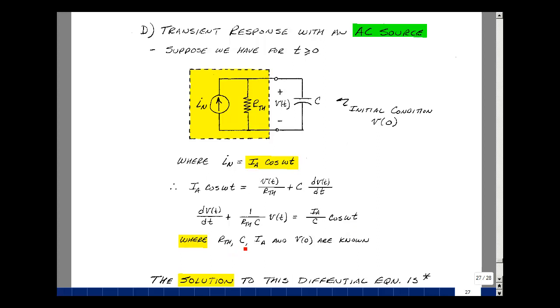Where R thevenin, C, I sub A, and V0 are all known values. This is my first order differential equation with the first derivative of the voltage, the voltage itself, and then the forcing function.